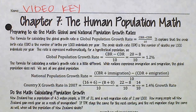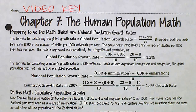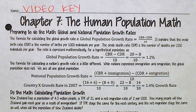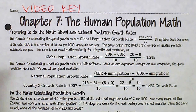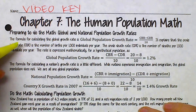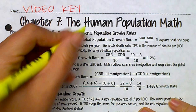Hey guys, welcome to Chapter 7 Math, all about the human population. Our first section is going to be preparing to do the math: global and national population growth rate. We talked about this a couple of times in class, so let's go through this together and highlight some important information so it sticks in our brains. The formula for calculating the global growth rate is: global population growth rate equals CBR minus CDR over 10.